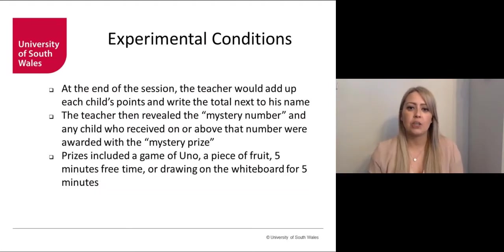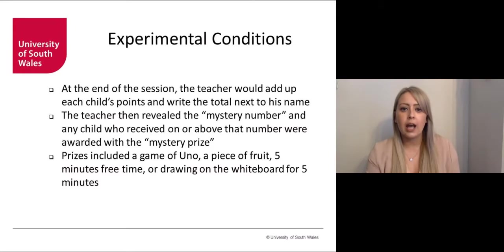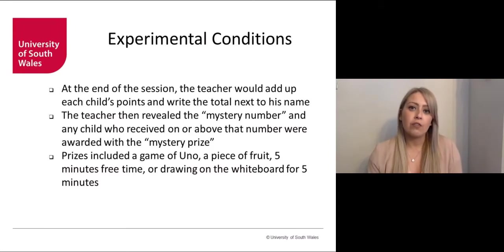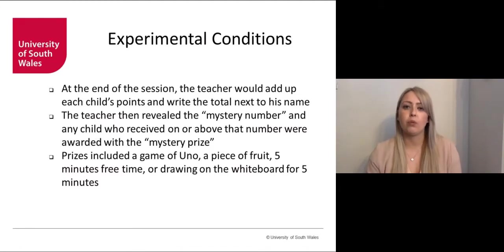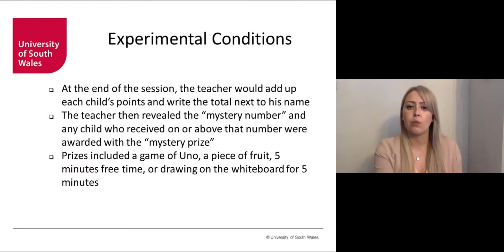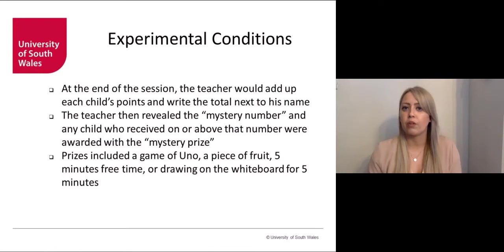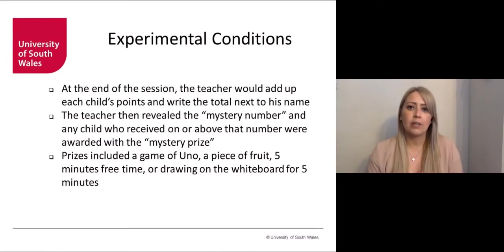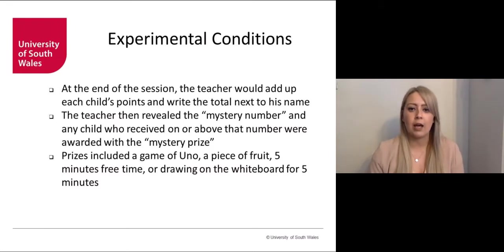At the end of the session, the teacher added up each child's points and wrote the total next to their name. She then revealed the mystery number, and any child who scored at or above that number was awarded a mystery prize. Children were unaware of the criterion for winning or what prize they were working for until the end. Prizes included a game of Uno, a piece of fruit, five minutes of free time, or drawing on the whiteboard for five minutes.